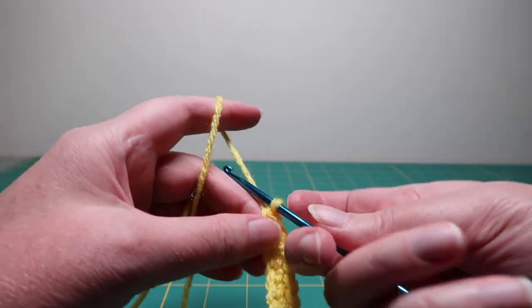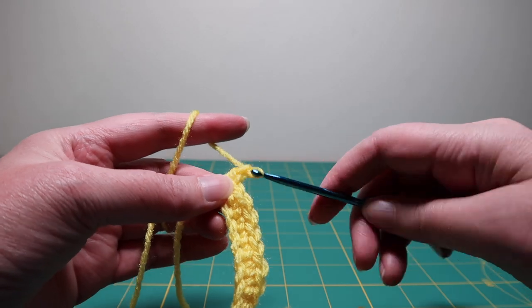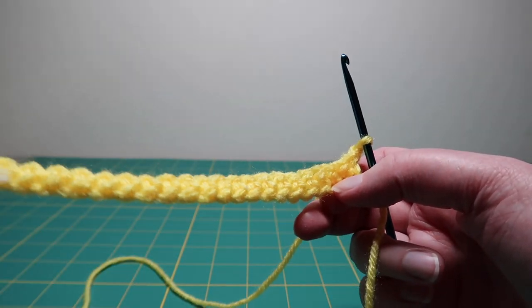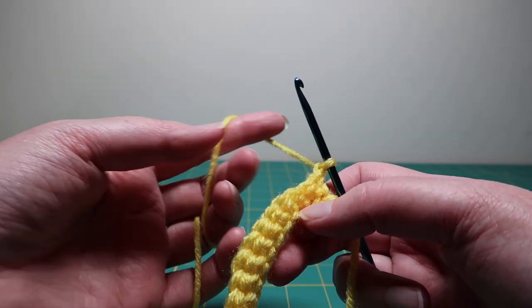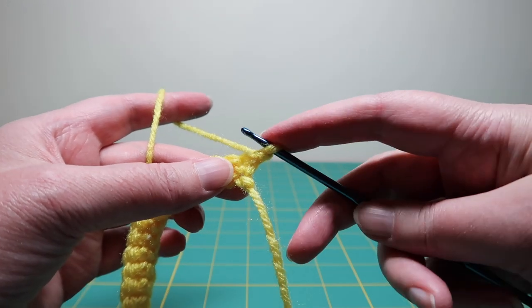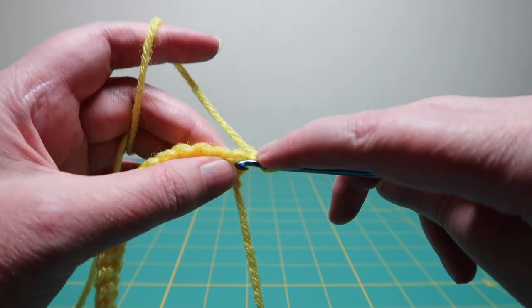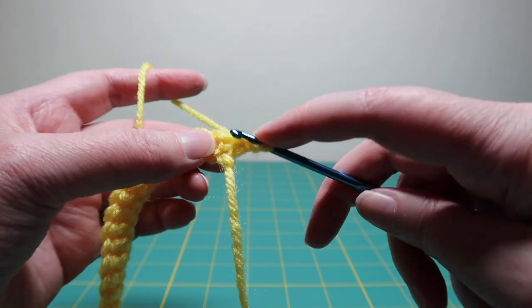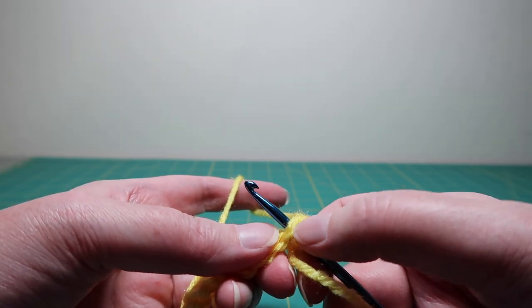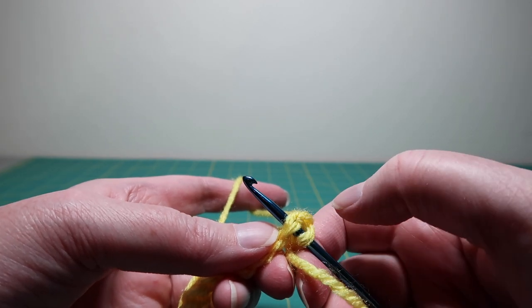So you finish the row with a chain stitch, and then turn your work. And to do a standard single crochet, you would poke it through that stitch under both sides of the V.